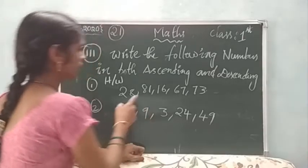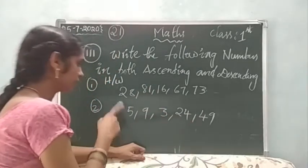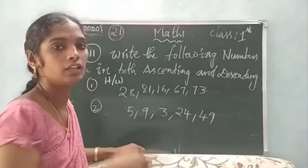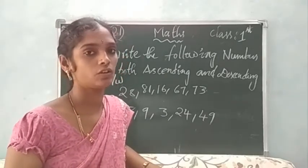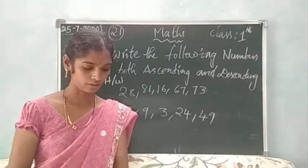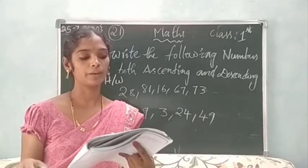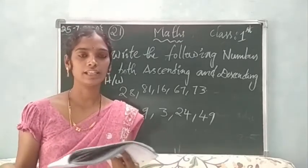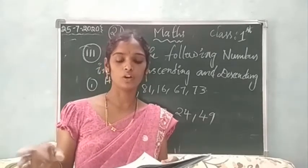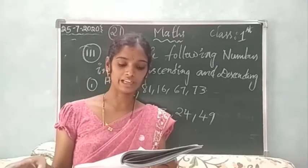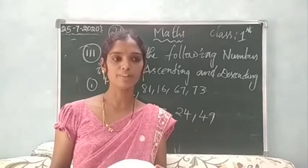I will give you: 28, 81, 16, 67, and 73. You can arrange in ascending order and descending order. And after that, another problem: 59, 3, 24, and 48. You can arrange in ascending order and descending order. Okay, children — do you understand? Ascending order means starting with the small number up to the greatest highest number. And if a number increases from less to more, then we say it is ascending order. Descending order means if a number decreases from more to less, then we say it is descending order.